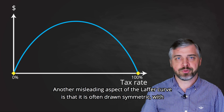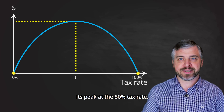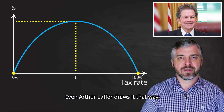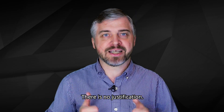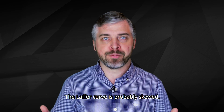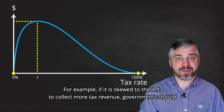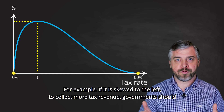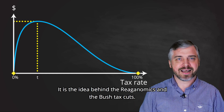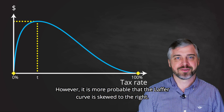Another misleading aspect of the Laffer Curve is that it is often drawn symmetrically, with its peak at the 50% tax rate. Even Arthur Laffer draws it that way. Why? There is no justification. The Laffer Curve is probably skewed. For example, if it is skewed to the left, to collect more tax revenue governments should lower the maximum tax rate — that is the idea behind Reaganomics and the Bush tax cuts.